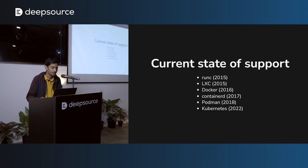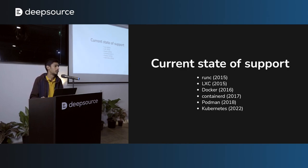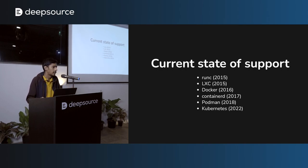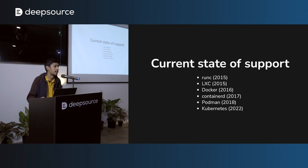What's the current state of support for checkpoint and restore? CRIU as a project was conceptualized in late 2014 and early 2015. Once working, support was added for RunC and LXC, closely followed by Docker. ContainerD and Podman were added in subsequent years, but Kubernetes was the real challenge. The Kubernetes integration started in 2018 with the KEP, and after four years of effort, it's finally been implemented and is available as an alpha feature in v1.25.